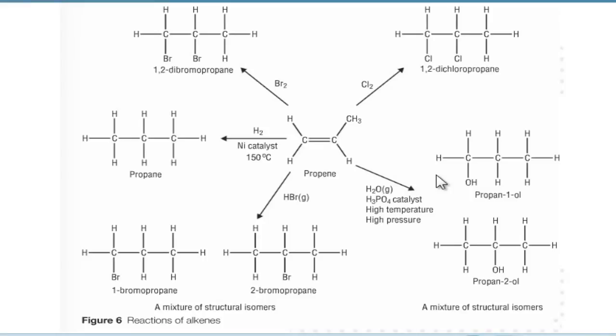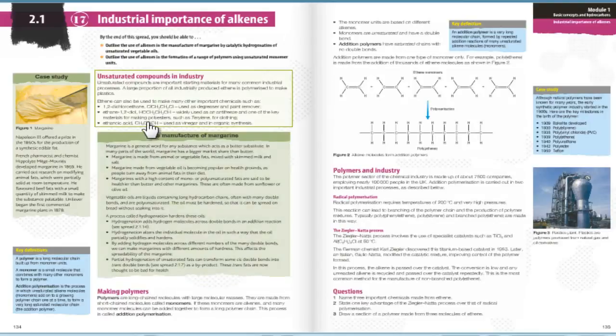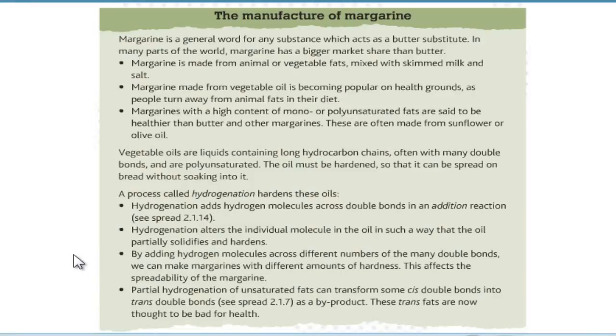We'll now move on to the industrial importance of alkenes and margarine. Why am I talking about margarine? Because it is an unsaturated compound, and you can make it into a polymer chain. This is how the synthetic fats were born. It uses the same process as we looked at before, hydrogenation. This is just an applied process. Hydrogenation here is what we're looking at.